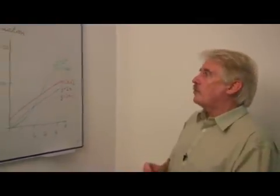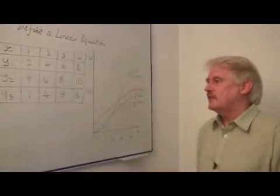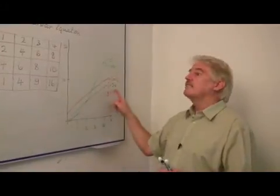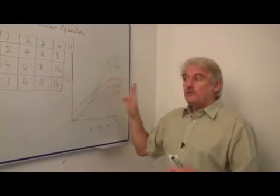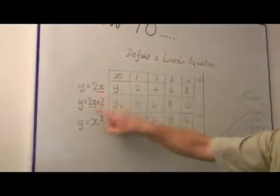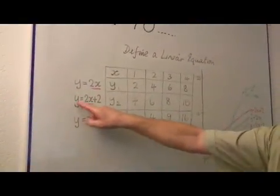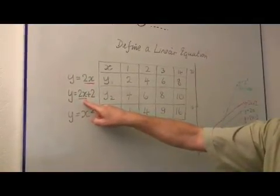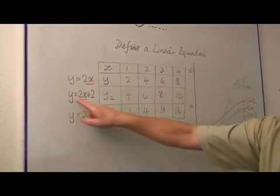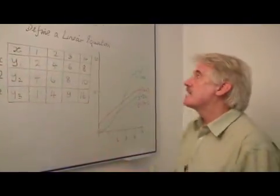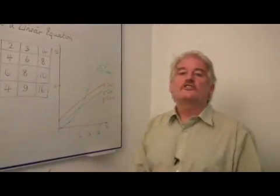So what we're looking for with a linear equation is, first of all, on a graph like this, we're looking for a straight line. We will know that it is a straight line because x and y will both be to just plain x and y. No x squareds or y squareds or 1 over x's or anything like that. Y equals so many x plus something. This is a linear equation. Thank you.